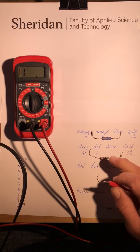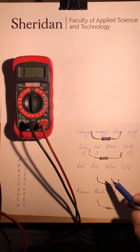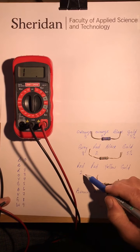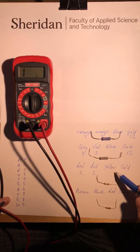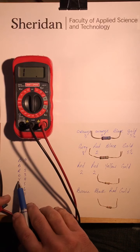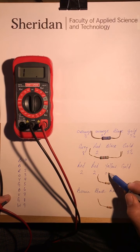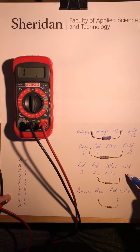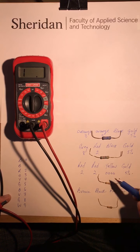Let's take a look at the next one: red, red, yellow, gold. Red is two, red is two, multiplier yellow represents four zeros, so I've got 220,000 ohms. Gold is five percent, so 220,000 ohms plus or minus five percent.